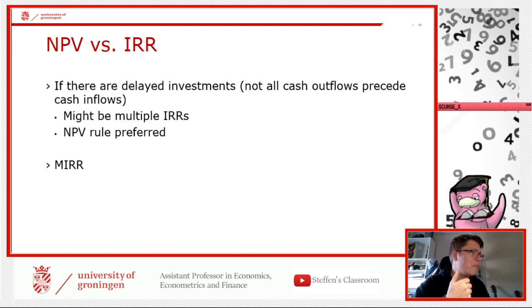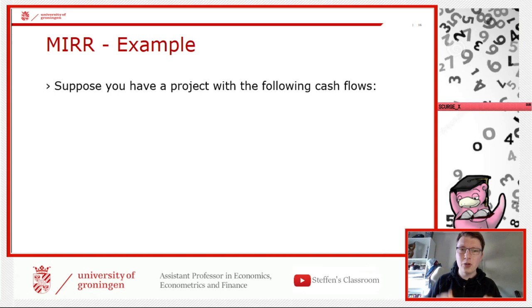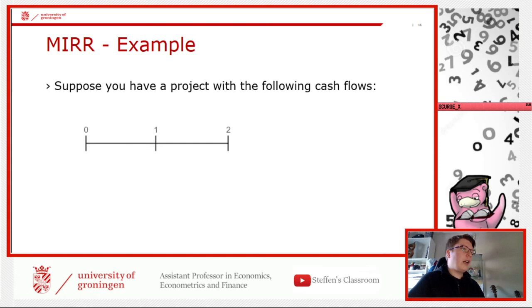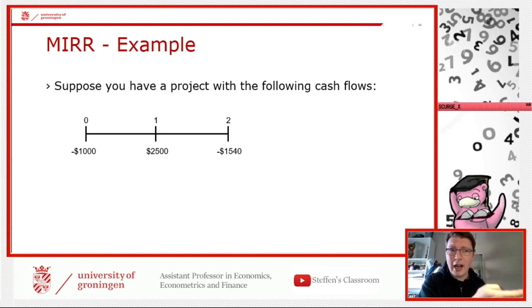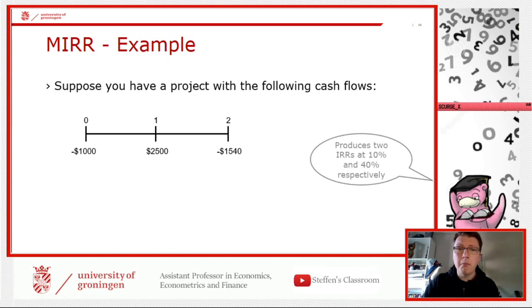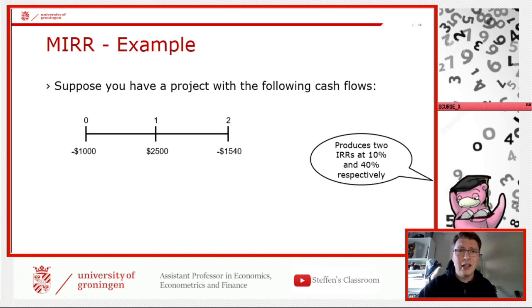There is actually a fix for this: it is called the modified IRR, or MIRR. Let's look at an example. Suppose you have three cash flows: at year zero an investment of $1,000; at year one a cash inflow of $2,500; at year two a cash outflow of $1,540. This profile yields two IRRs — 10% and 40% respectively.